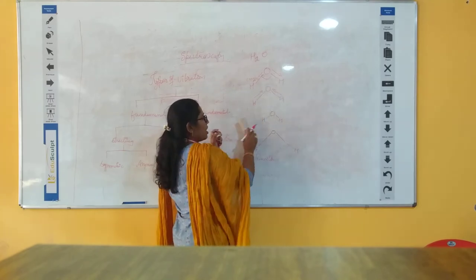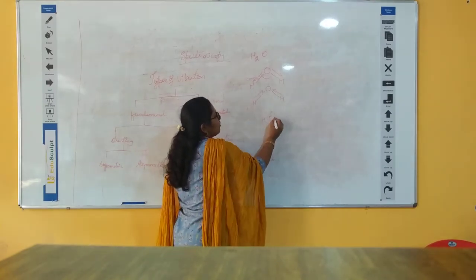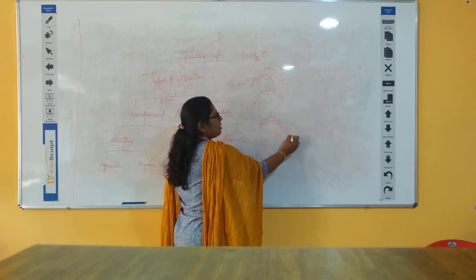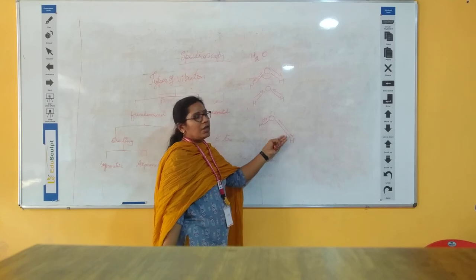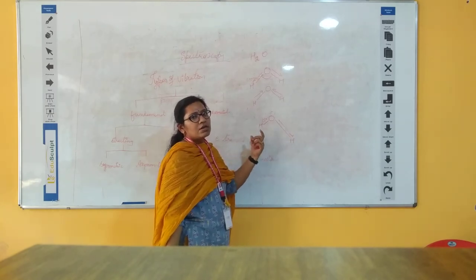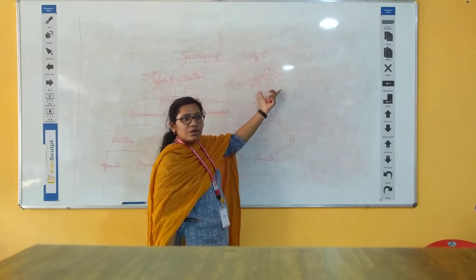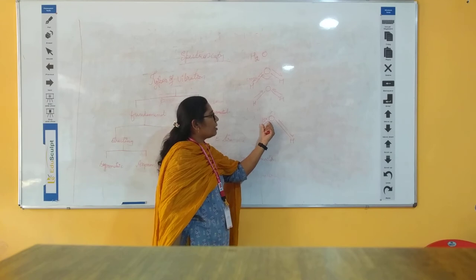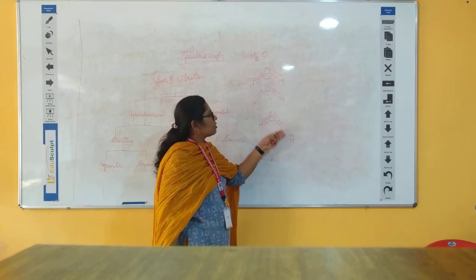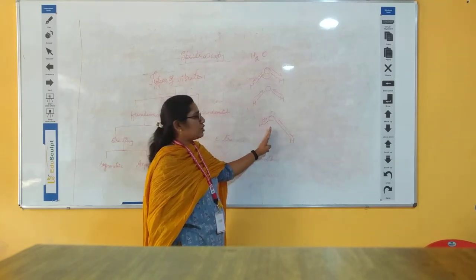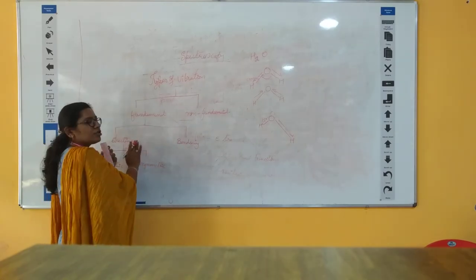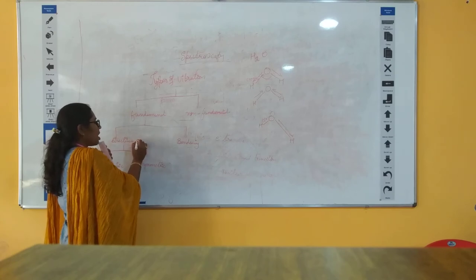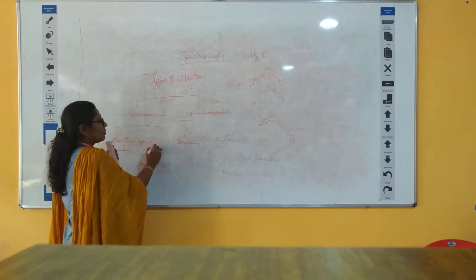If out of the two bonds, one contracts while the other elongates, that is asymmetric stretching. In symmetric stretching, both bonds either increase or decrease in bond length together. Stretching vibrations require more energy compared to bending vibrations, so stretching vibrations occur at higher energy than bending vibrations.